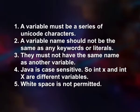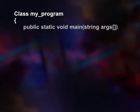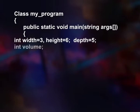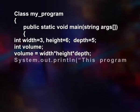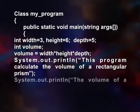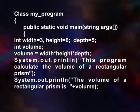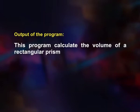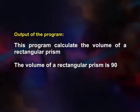The following example program illustrates the use of variables in Java: class MyProgram { public static void main(String[] args) { int width = 3, height = 6, depth = 5; int volume = width * height * depth; System.out.println("This program calculates the volume of a rectangular prism."); System.out.println("The volume of a rectangular prism is " + volume); } } Output: This program calculates the volume of a rectangular prism. The volume of a rectangular prism is 90.